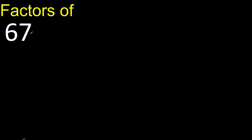Factors of 67. Always start with 1. 67 divided by 1 is 67.